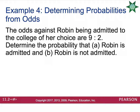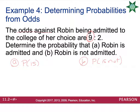You can also determine probabilities from odds. The odds against Robin being admitted to the college of her choice is 9 to 2. Determine the probability that Robin is admitted and the probability that she is not. Since these are odds against, the 9 comes from the probability she won't get in, and the 2 comes from the probability she will get in. The denominator is found by adding 9 and 2 together to get 11. So the probability Robin will be admitted is 2 out of 11, and the probability she will not be admitted is 9 out of 11.